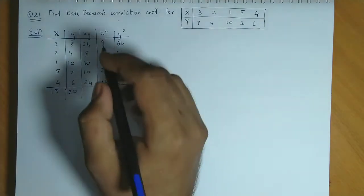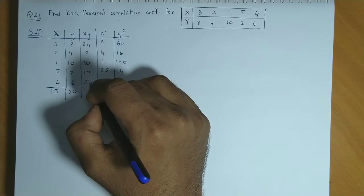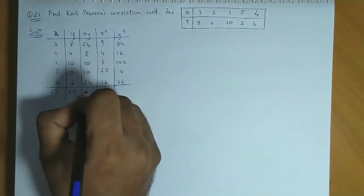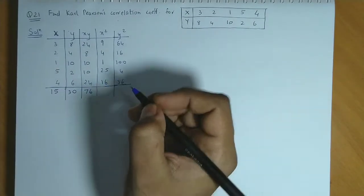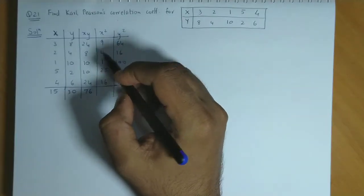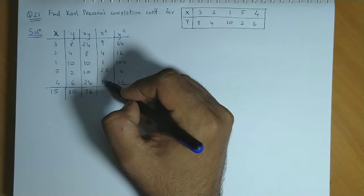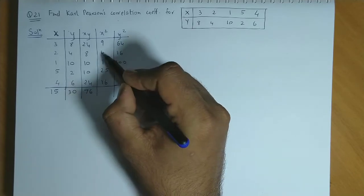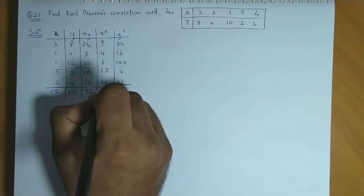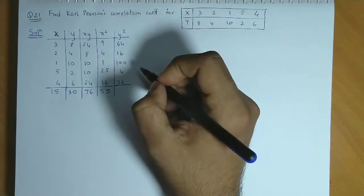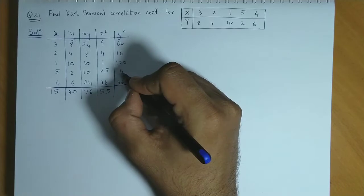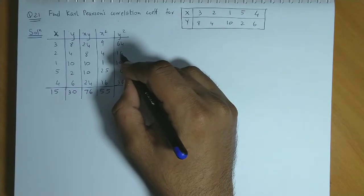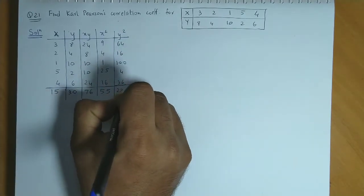Now let's add this. 24 and 24 is 48, 48 and 8 is 56, 56 and 20 is 76. Now we add x-square: 9 and 1 is 10, and 20 is 30, 30 and 25 is 55. Last column: 40 and 100 is 140, 140 plus 80 is 220. So this total is 220.